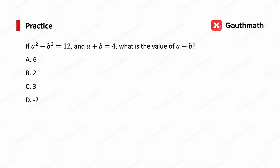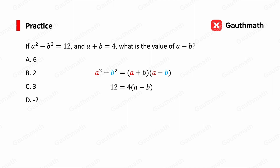Let's do one practice: if a² − b² = 12 and a + b = 4, what is the value of a − b? We factorize a² − b² as (a + b)(a − b). Substituting the given values: 12 = 4 × (a − b). Dividing both sides by 4, we get a − b = 3. So the correct answer is C.